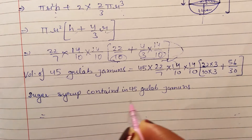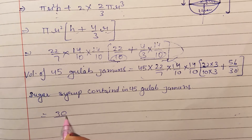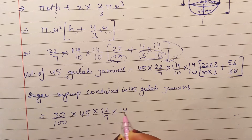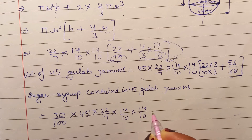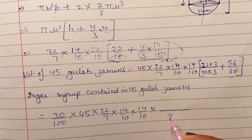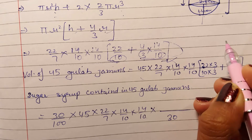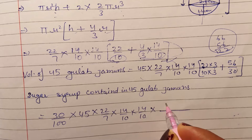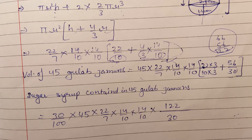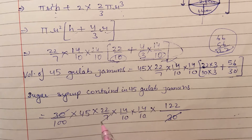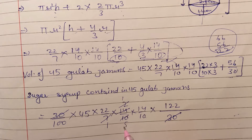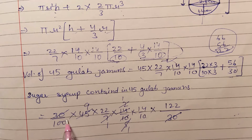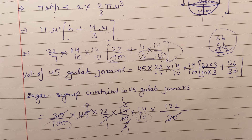Sugar syrup contained in 45 gulab jamuns = 30% of this volume = 30/100 × (45 × 22/7 × 14/10 × 14/10 × 122/30)। अब cancellations करते हैं: 30 से 30 cancel, 7 से 14 cancel (2 बचा), 10 से 10 cancel, 5 से 45 cancel (9 बचा)। Niche 100 और 10 multiply होकर 1000 बनेगा।